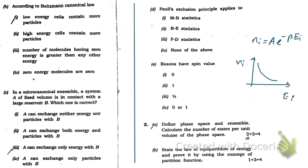From here you can see that low energy cells contain more particles. If you come to the left side, energy is decreasing but number of particles is increasing from this graph. So the option is: low energy cells contain more particles.